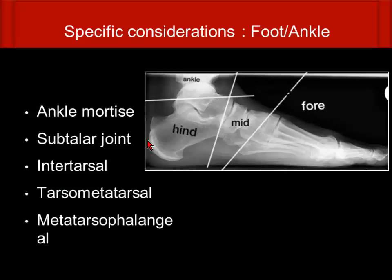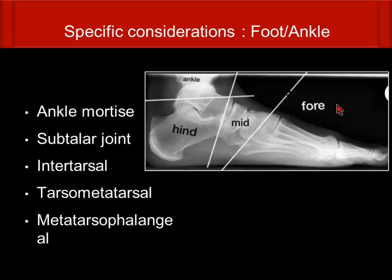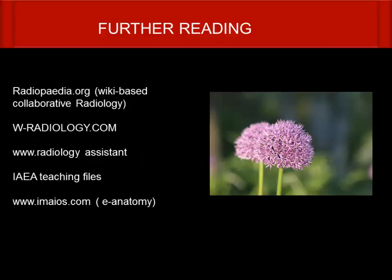When reporting, for example the ankle — look at the ankle mortise, then go to the subtalar joint, intertarsal, tarsal-metatarsal, and metatarsophalangeal joints. Starting systematically, you are not going to miss any findings. If you go logically from top to bottom, it is unlikely you will miss any issues.